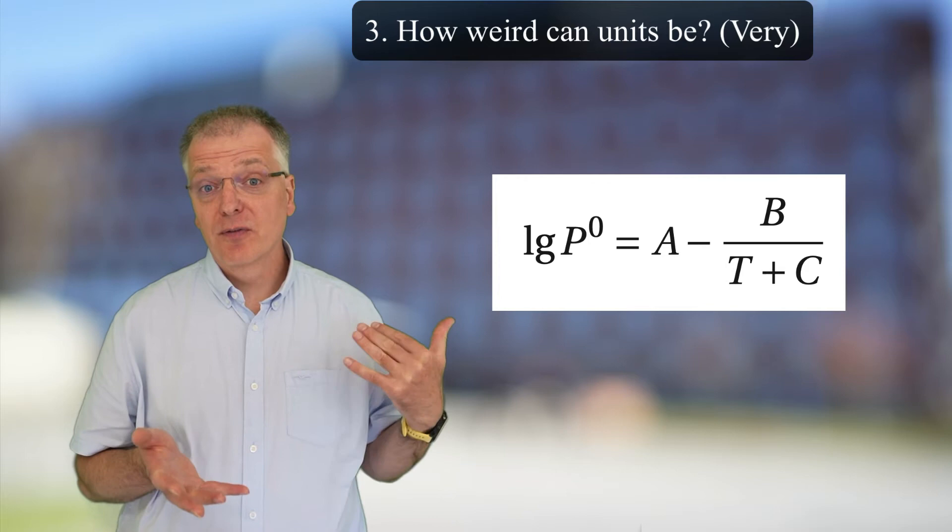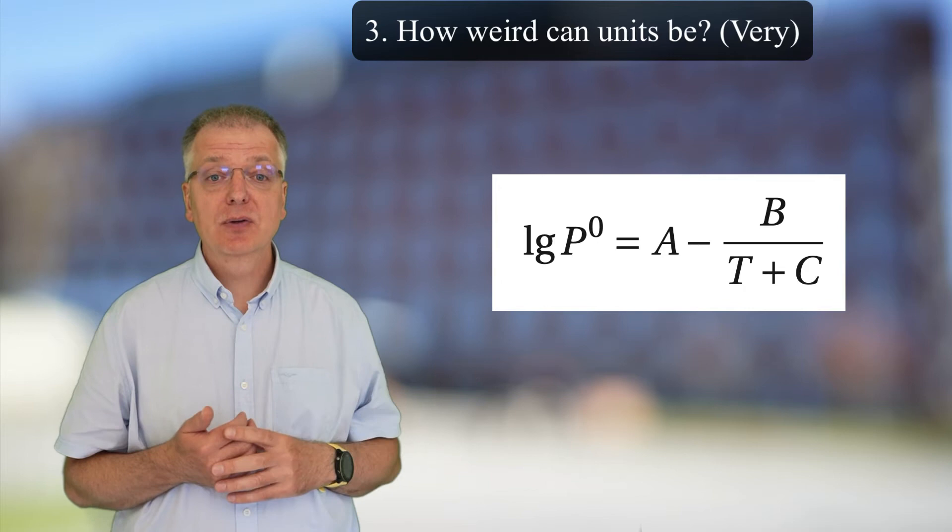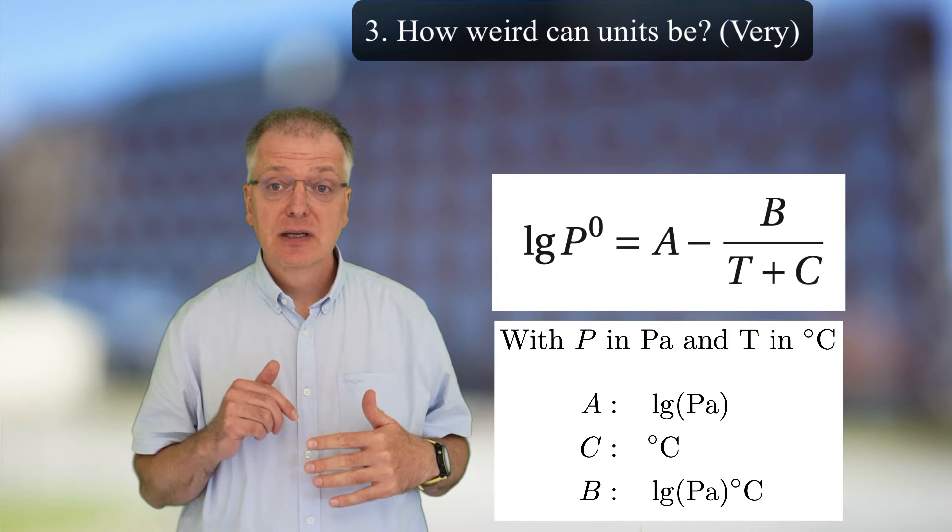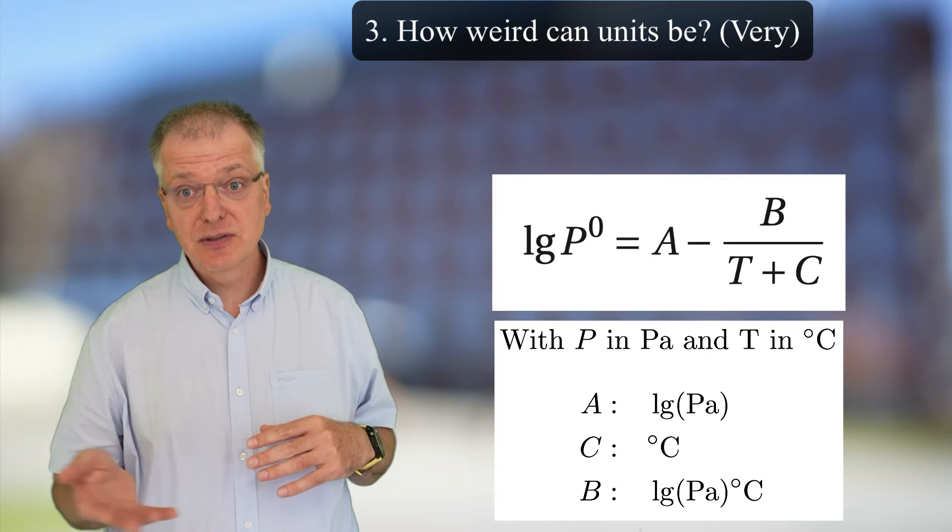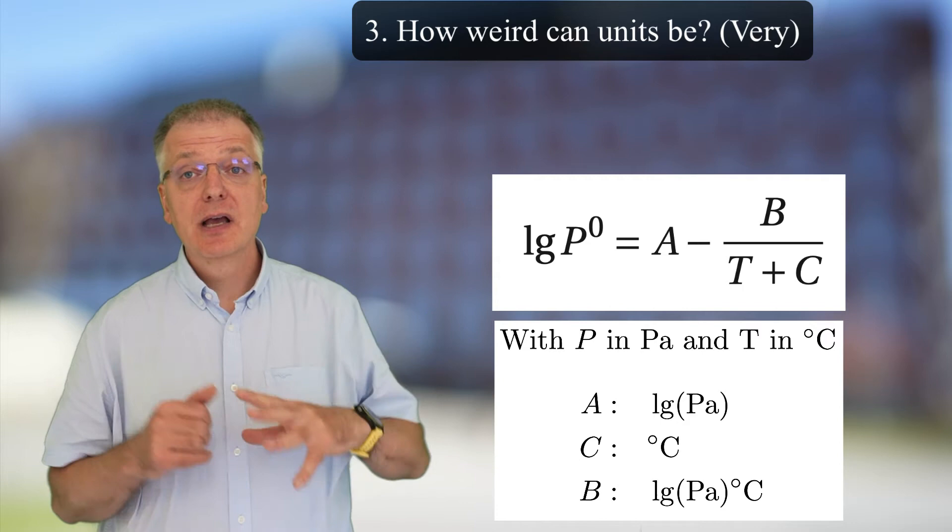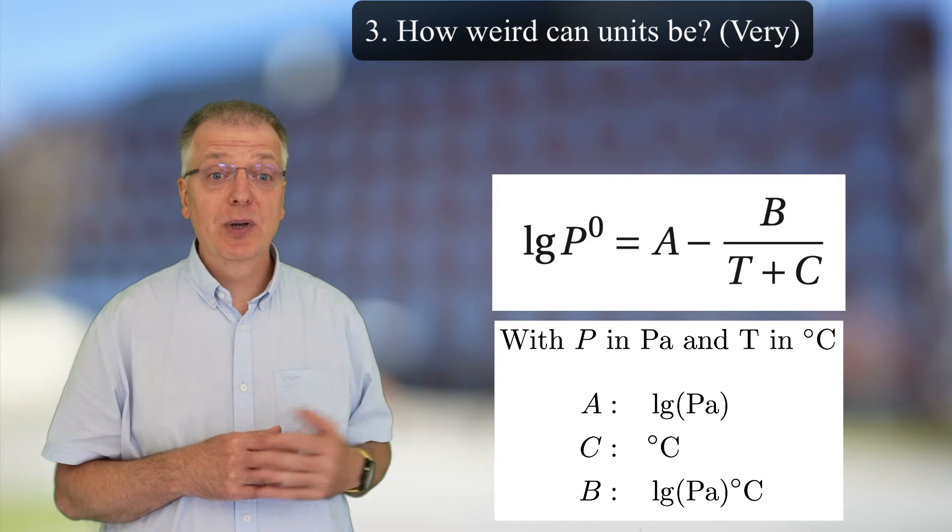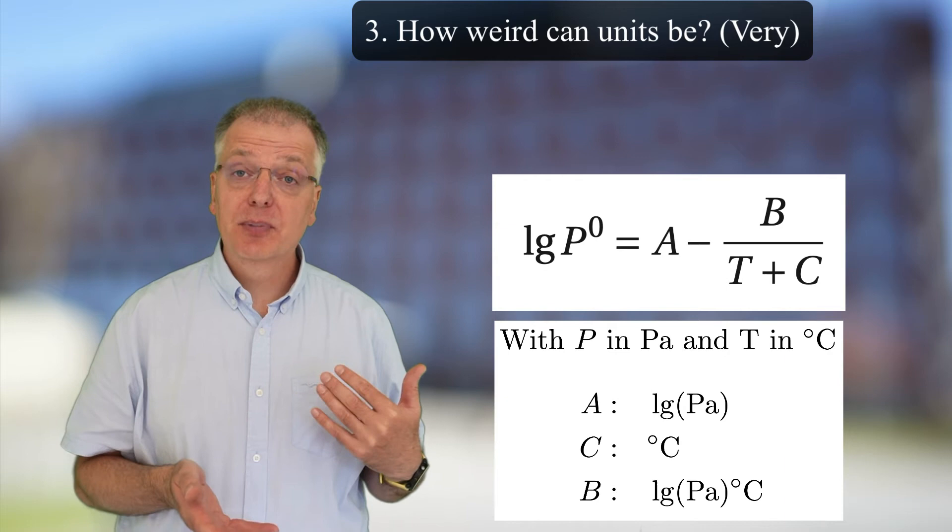If we, however, look at Antoine's equation, a curve fit for vapor pressure over pure substance, the three fitting parameters all have units. If pressure is in Pascal and temperature is in Celsius, the parameter A must have the strange unit base-10 logarithm of Pascal. The parameter C must have the same unit as T, so Celsius, since it's added to T. Finally, the parameter B must have the unit Celsius multiplied with the base-10 logarithm of Pascal. Truly a rather weird unit.